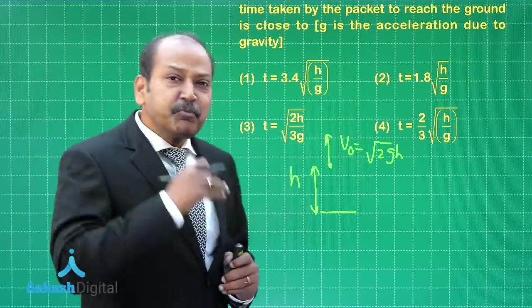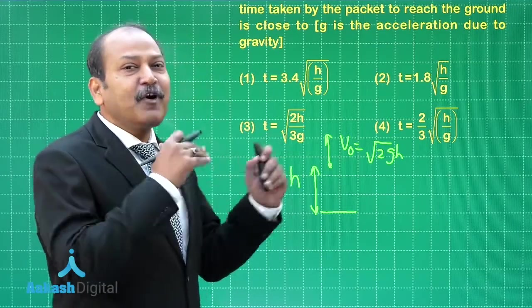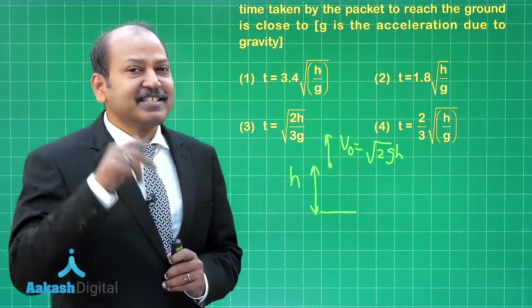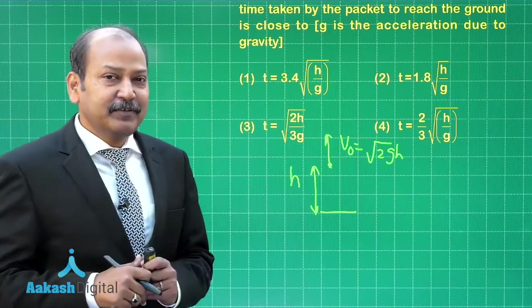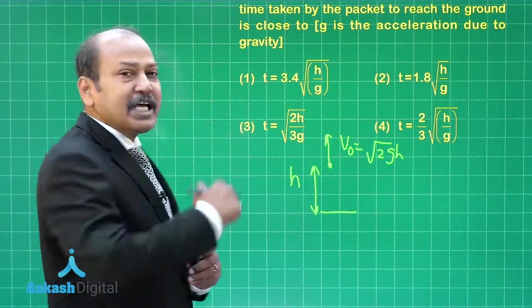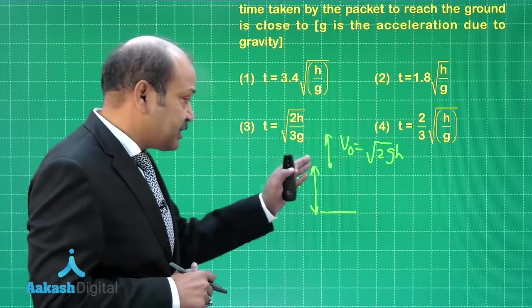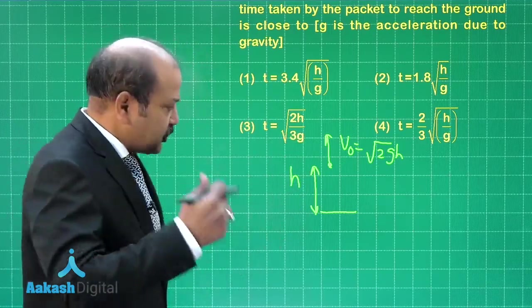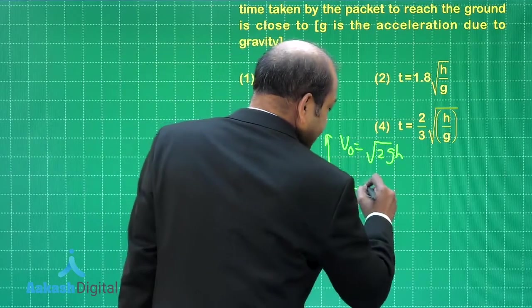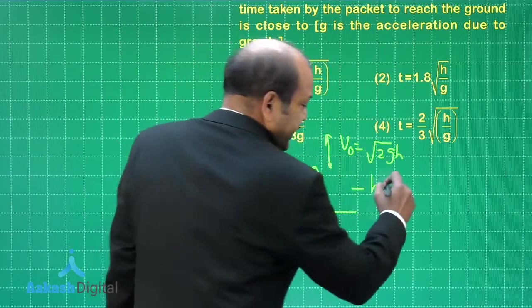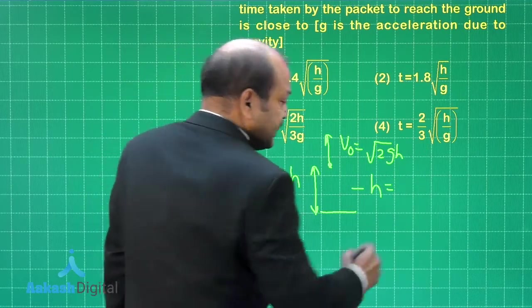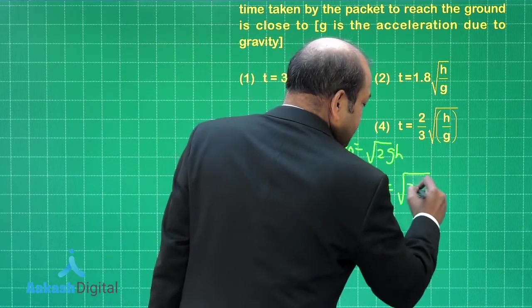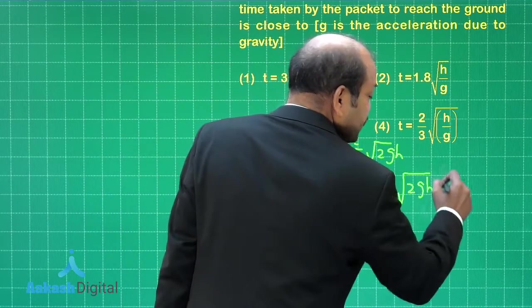From this point on it is uniformly accelerated motion, but the acceleration is g in the vertically downward direction. If we call the upward as the positive direction, then the displacement is minus h when it hits the ground. So the equation becomes minus h equals initial velocity v_naught, which is root 2gh into t.